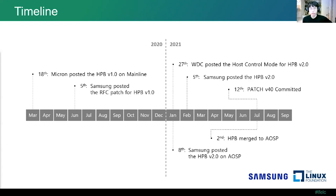You can see the timeline of important events that occurred during the HPB upstream process. On March 18th, 2020, Micron posted the first HPB code following the HPB 1.4 specification on the mainline. After more than one year, HPB was finally merged into AOSP under the open source project and committed as a Linux staging tree upgrade. If you want to know the more detailed history, please check patches and comments on the Linux staging sub-tree.